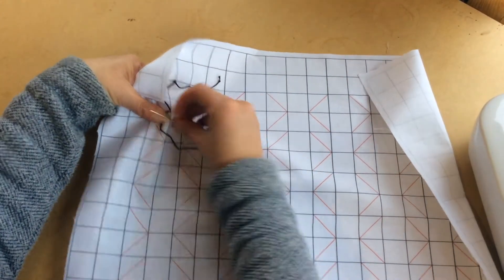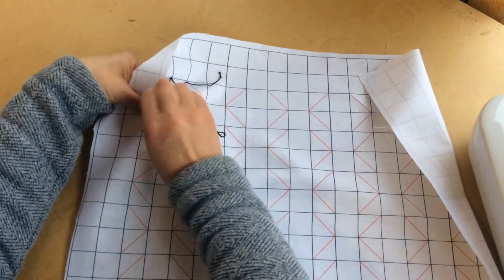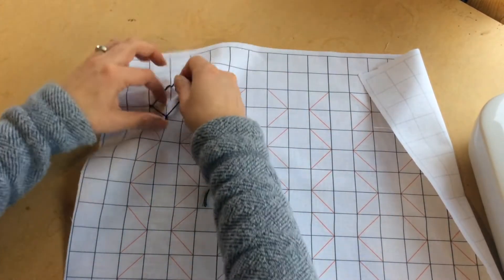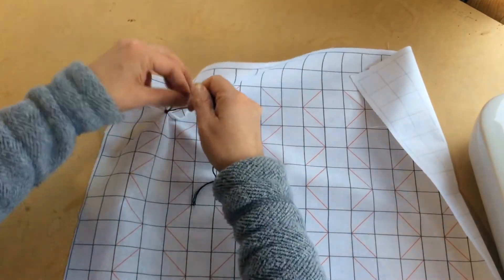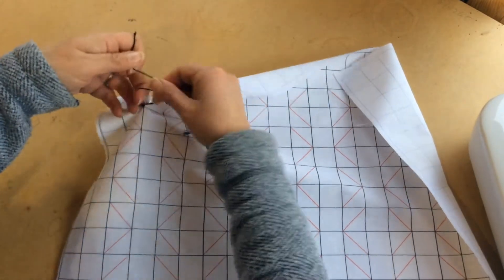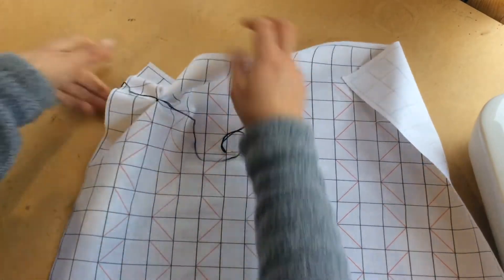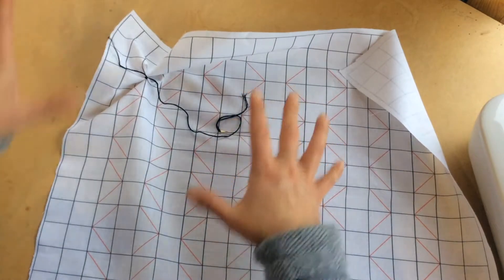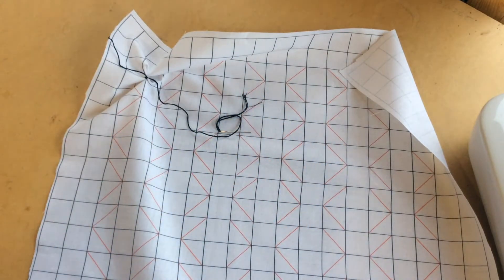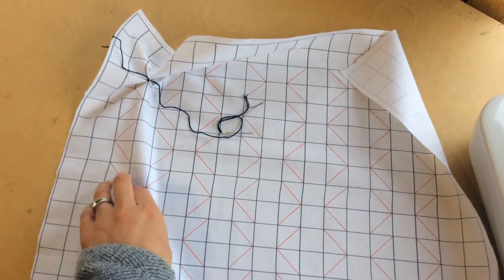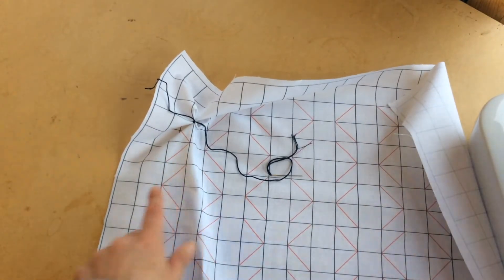Then we're going to pull it all nice and tight together. I left a nice big long tail when I started and I'm going to tie that off. Initially you're thinking oh my gosh that is going to be such a mess, but do persevere because it starts to form very quickly.